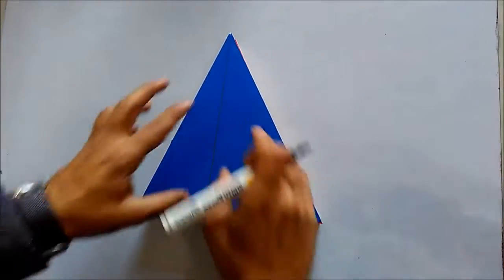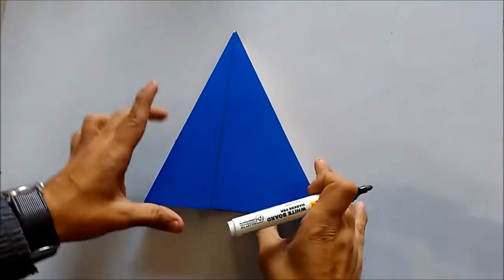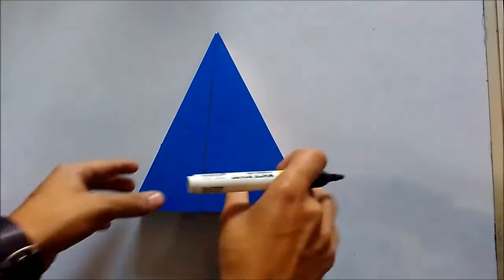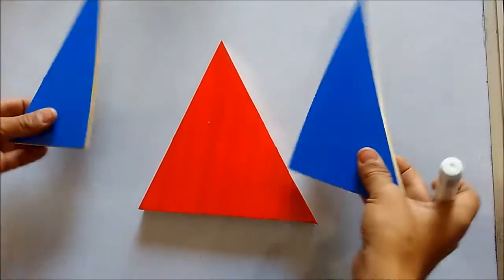Now what we will be doing is I will be cutting the first triangle, this blue triangle, such that it cuts towards the altitude. I am cutting this so now it has become two pieces.